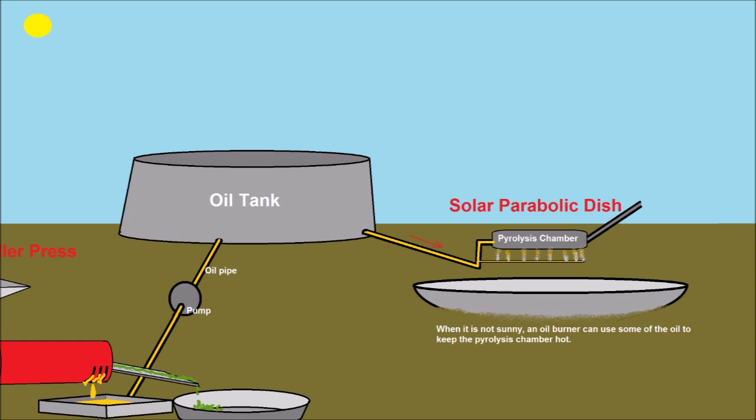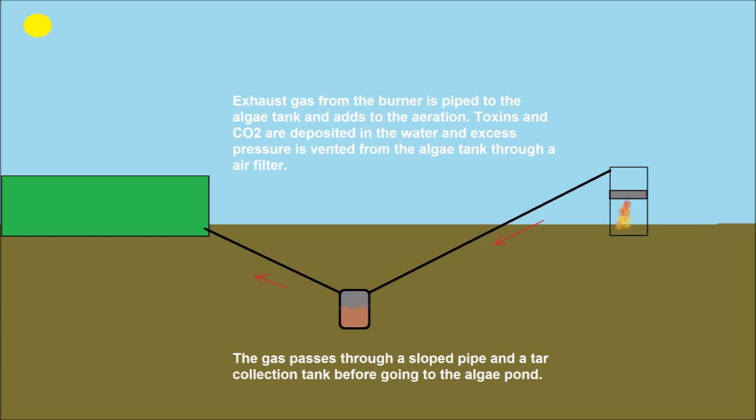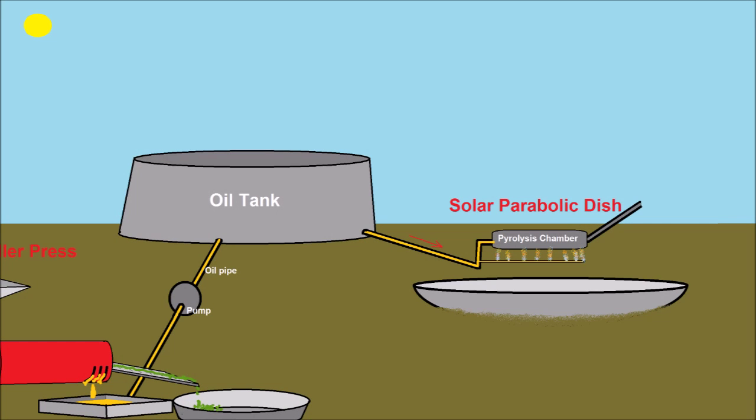The exhaust from the burner can be pumped through a soot filter and then into the algae pond to feed extra CO2 to the algae and clean the exhaust gases before releasing them. The oil drips into the pyrolysis chamber and is converted into syngas. The syngas is mainly hydrogen and carbon monoxide but will also have some hydrocarbons in it.